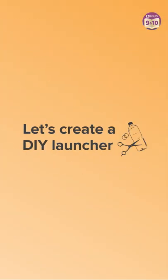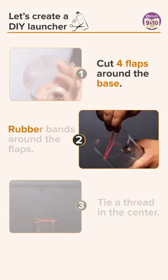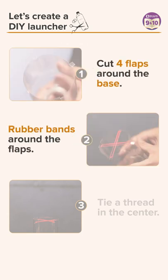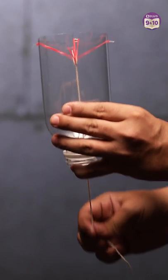But first, let's create a DIY launcher with a bottle. Cut the bottle and make 4 flaps at its base. Tie rubber bands around the flaps and then tie a thread in the center and suspend it through the bottle. There you have it, your launcher is ready.